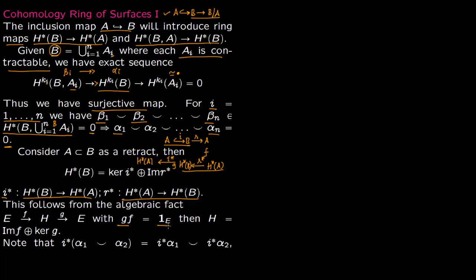Here F corresponds to R* and G corresponds to I*. So if G∘F equals the identity on E, then H equals image(F) ⊕ kernel(G), which means H*(B) equals image(R*) ⊕ kernel(I*). So if A is a retract of B — with the inclusion map and the retract — the cohomology ring on B can be written in this decomposed form.